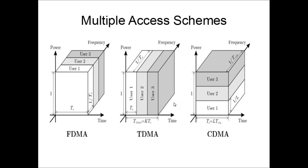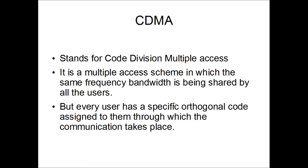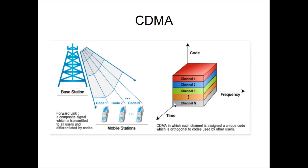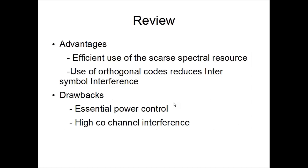In FDMA, we use frequency-divided channels where each channel is assigned to a particular user for a given amount of time. In TDMA, we split the spectrum into time slots which are assigned to users. In CDMA, when the code is orthogonal, we have many advantages. The entire frequency spectrum is divided into codes, and each orthogonal code is assigned to a single user who uses the entire spectrum. All users transmit in the same spectrum, differentiated only by their assigned code.